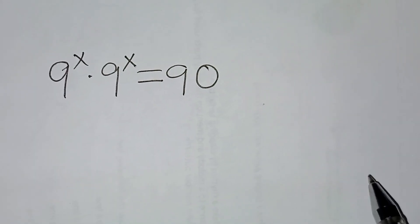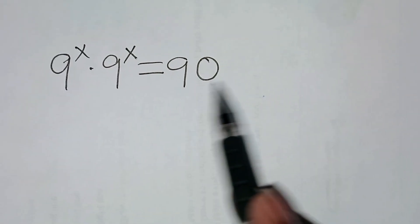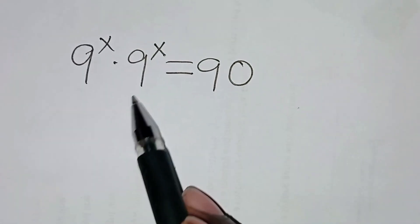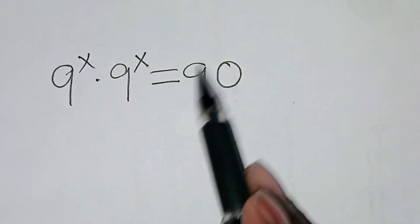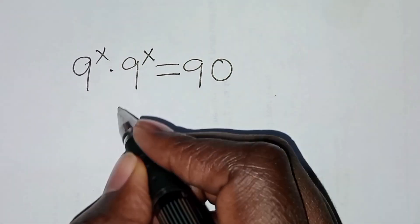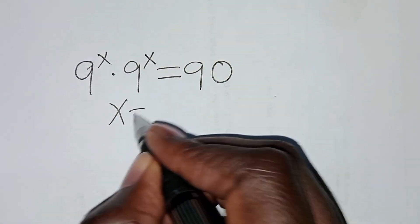You are welcome to solve this nice exponential equation, which is 9 to the power x times 9 to the power x, and this is equal to 90. So, what is the value of x?